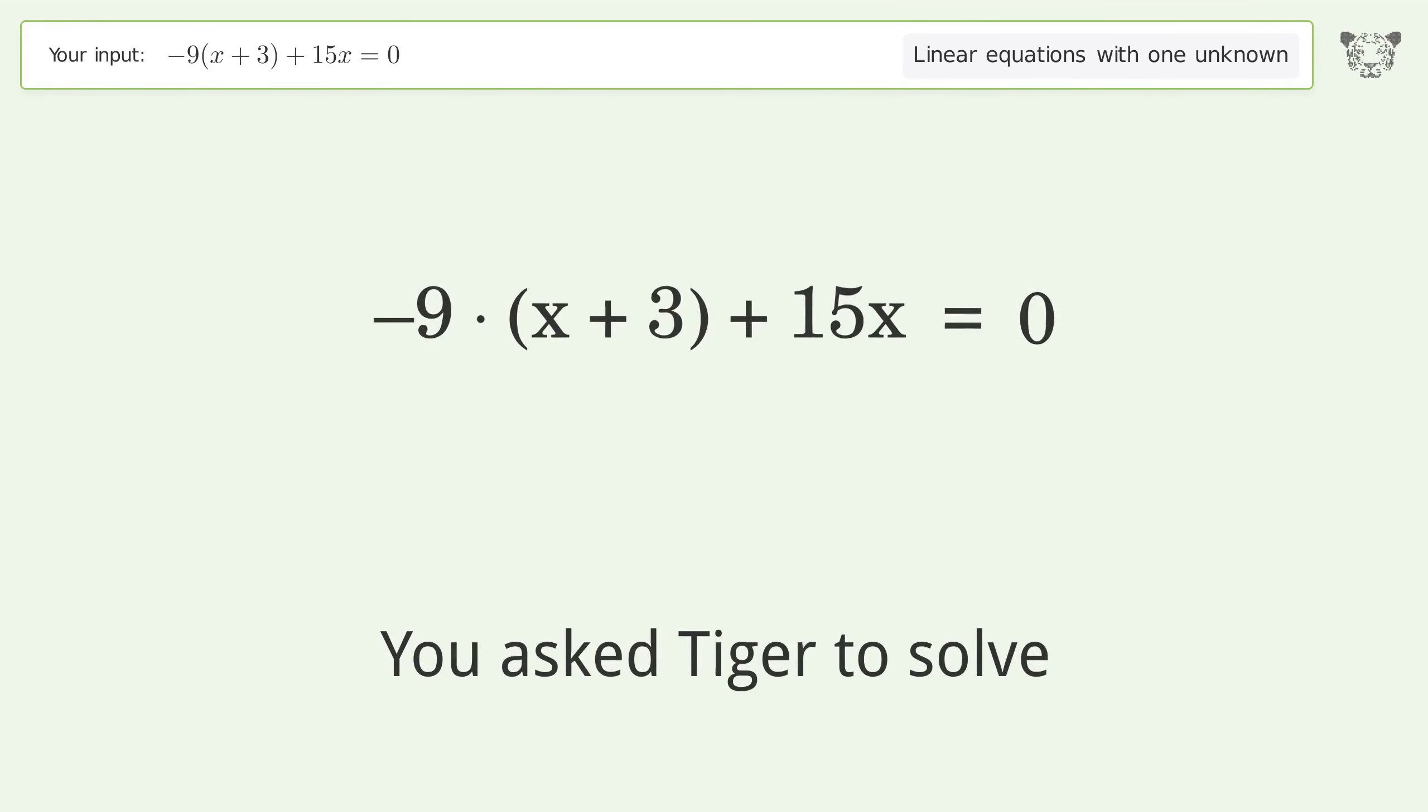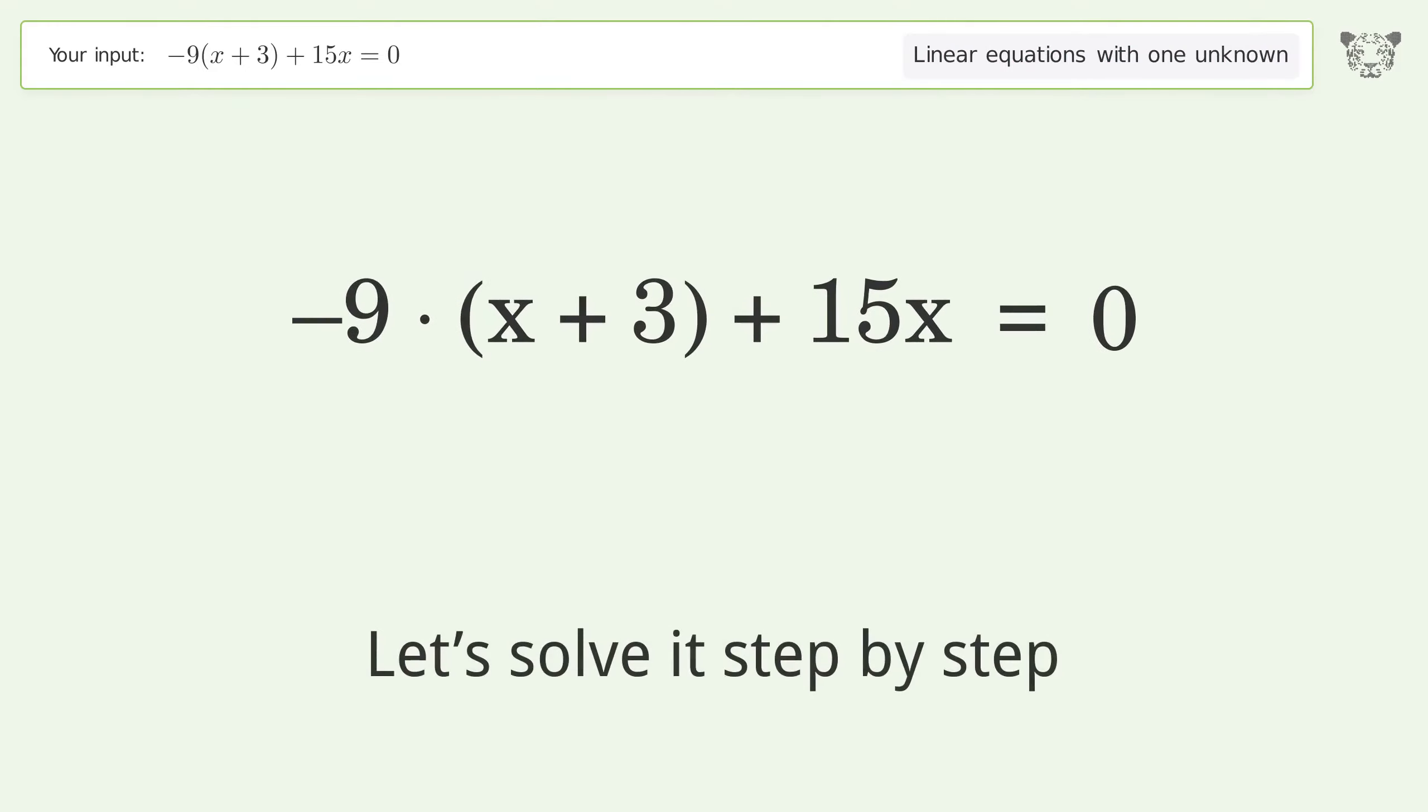You asked Tiger to solve this. This deals with linear equations with one unknown. The final result is x equals 9 over 2. Let's solve it step by step. Simplify the expression.